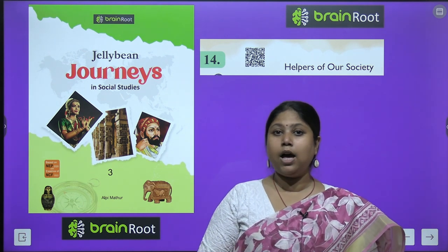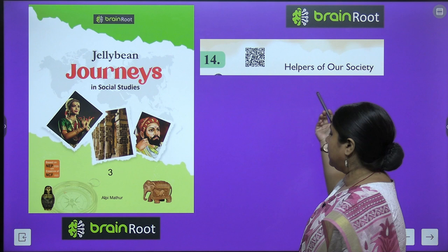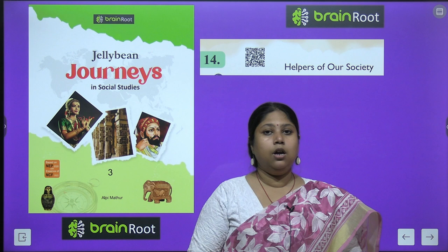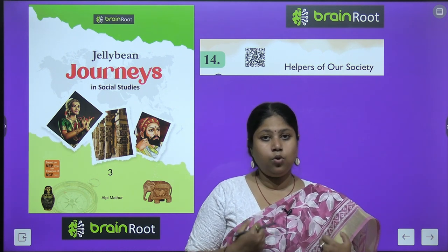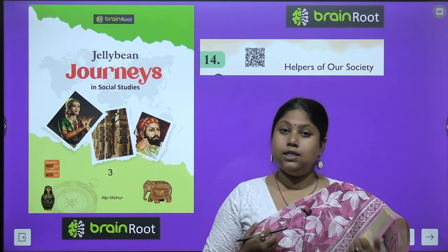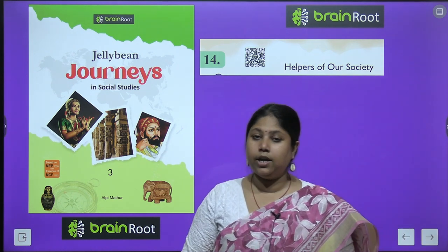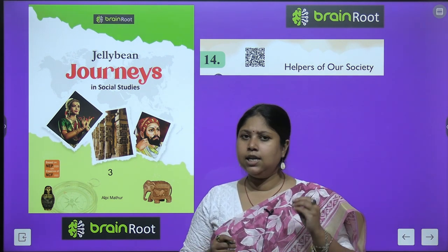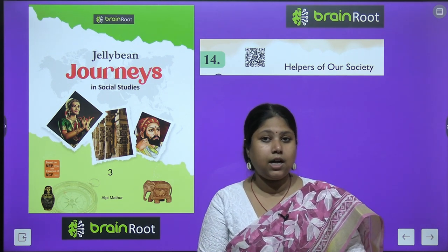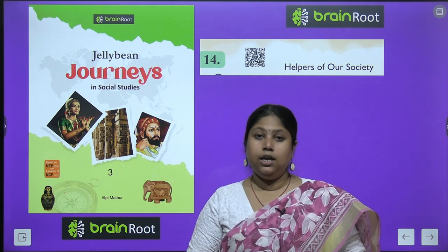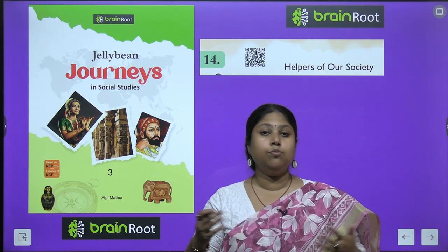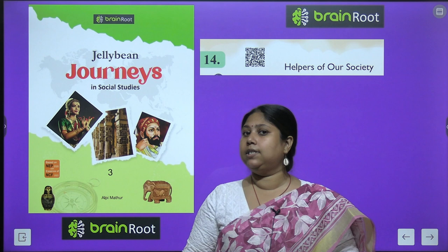Today, we are going to focus on chapter number 14: Helpers in our society. Hamaari society ke jho helpers hain. See children, we cannot do each and every work on our own. Hum har kaam nahi kar sakte. Hame kubhi na kubhi kisi na kisi ki zharurat pardti hai. Humare paas aise bhoat se loog hai jho hume rooz kisi na kisi kaam me madd kerte hai. Yeh loog humare kaam ko aasahan kerte hai aur humari life ko aur zhaadha smooth kerte hai. Tho aai yeh hume in helpers ke baare mein jaante hai.